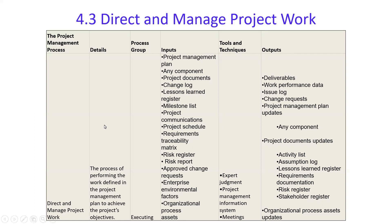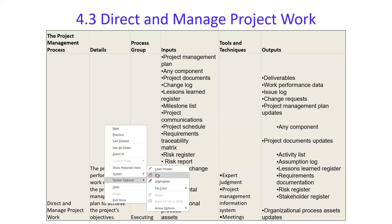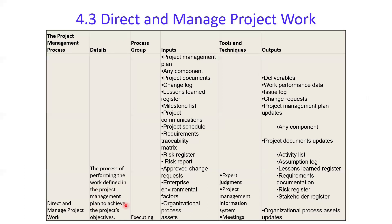Direct and Manage Project Work is defined as performing the work defined in the project management plan to achieve the project's objectives — it is part of the Executing process group. Key inputs include the project management plan, which guides what needs to be done. Project documents such as the change log, lessons learned register, milestone list, and project communications are also inputs.